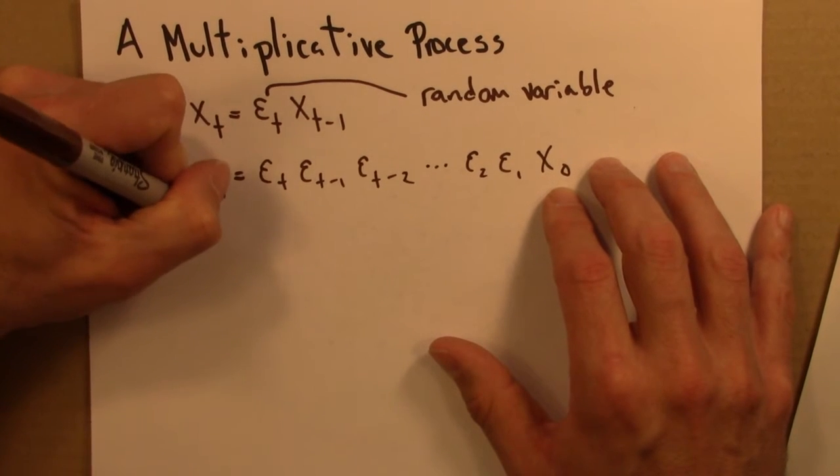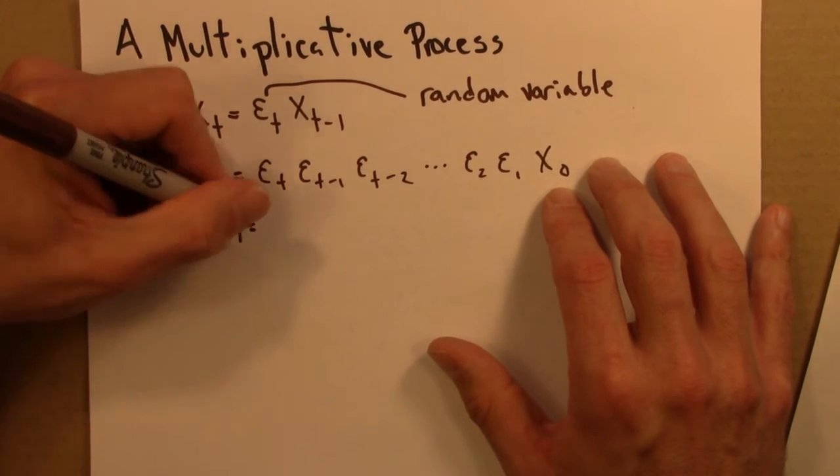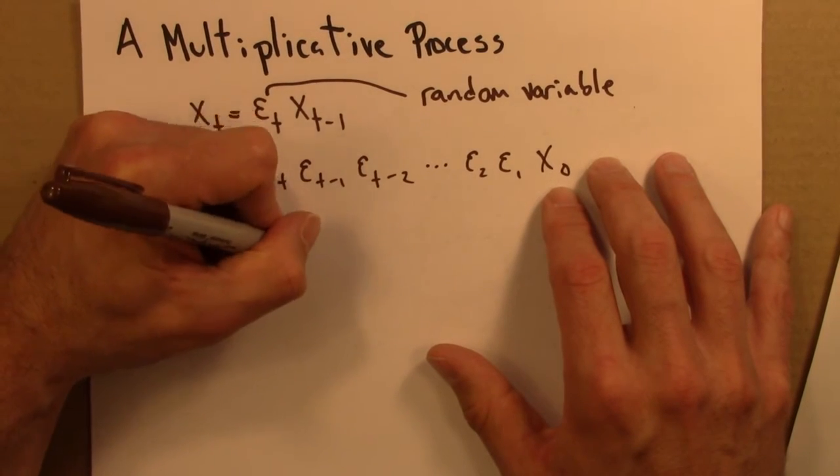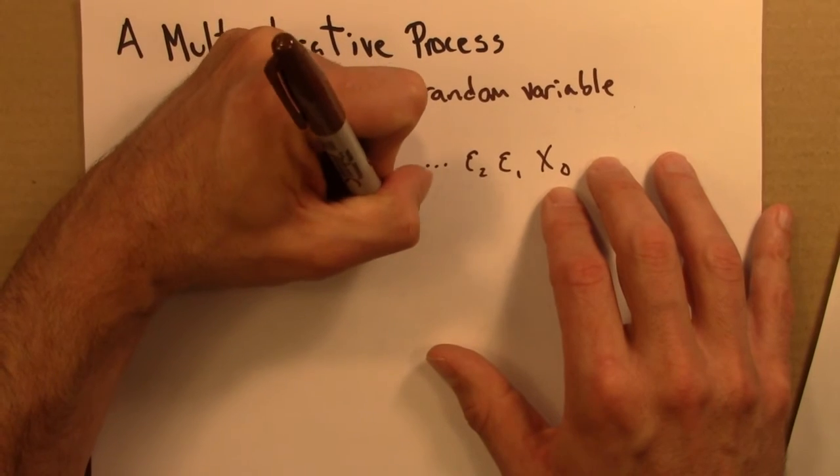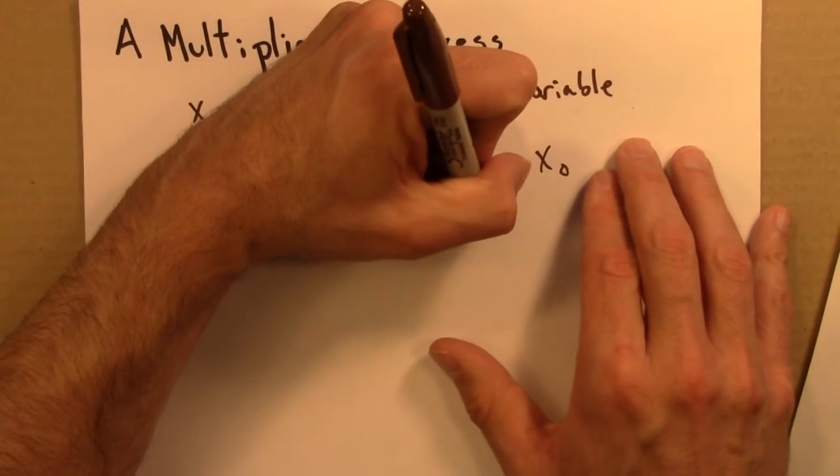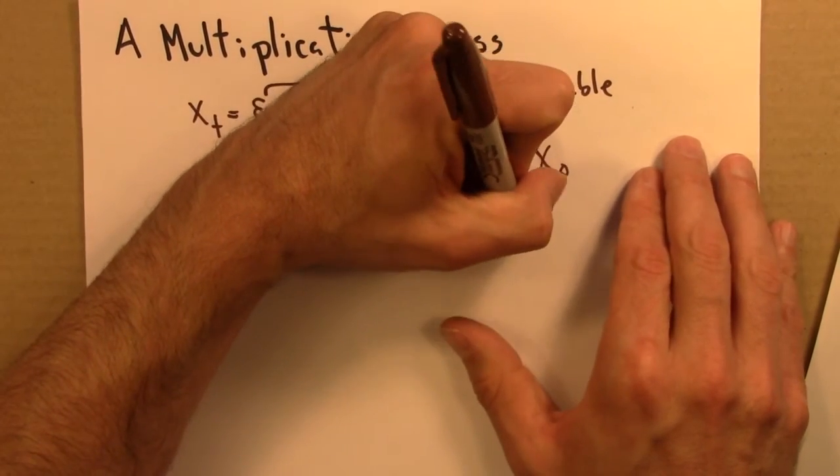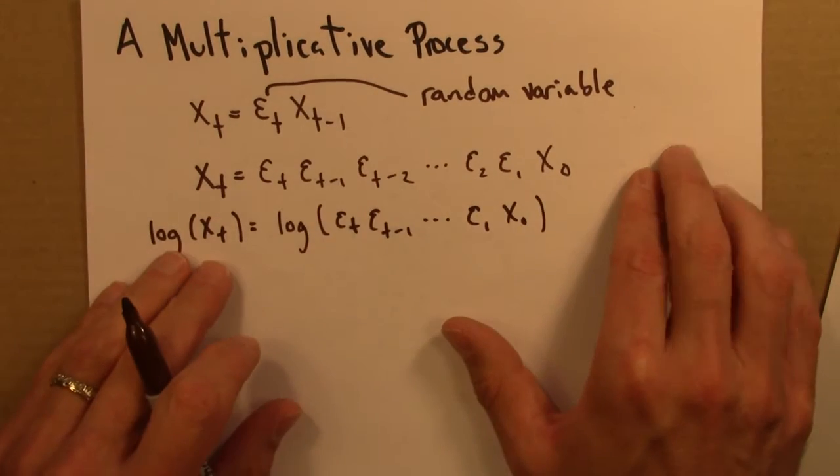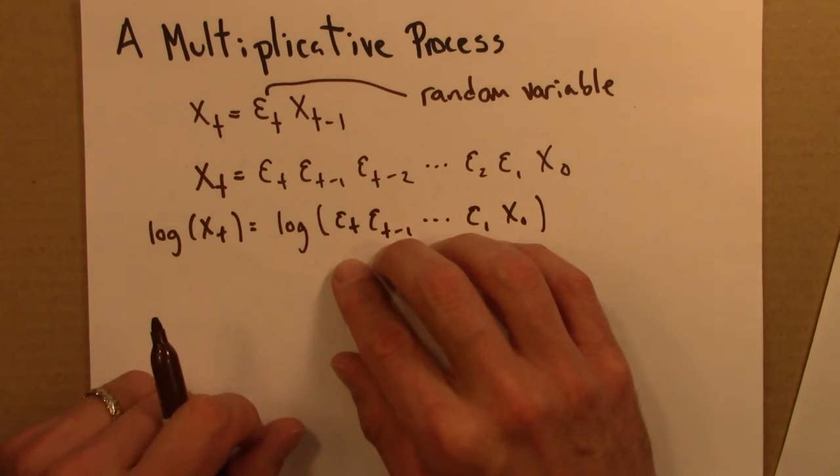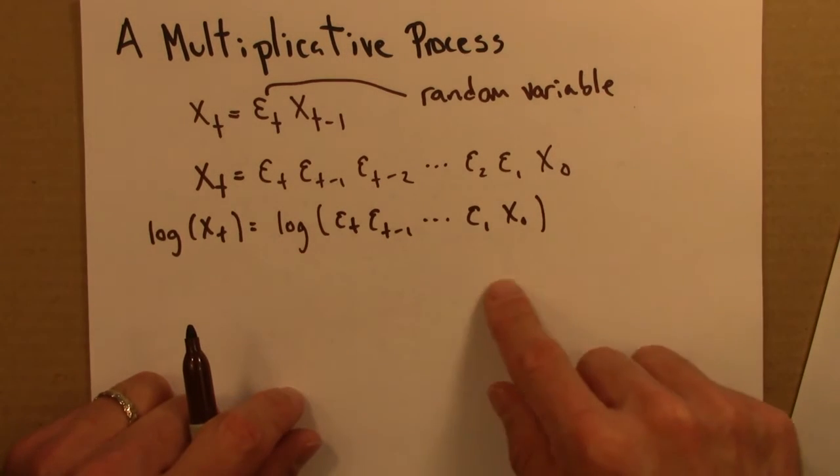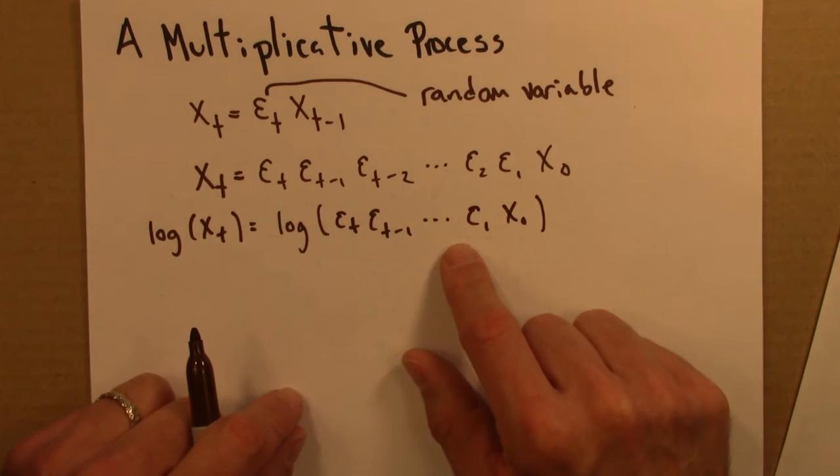So I'll take the log of the left-hand side, and then to keep the equal sign true, I need to take the log of the right-hand side too. So log of the entire left-hand side equals log of the entire right-hand side. Now, I'll use properties of logs to rewrite the right-hand side.